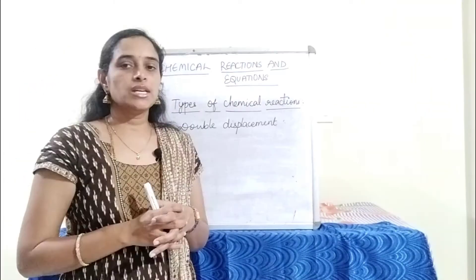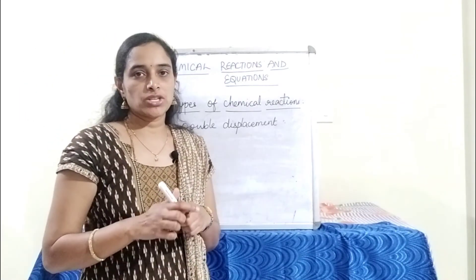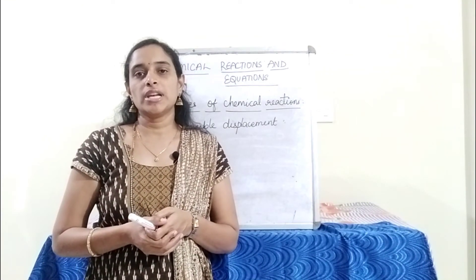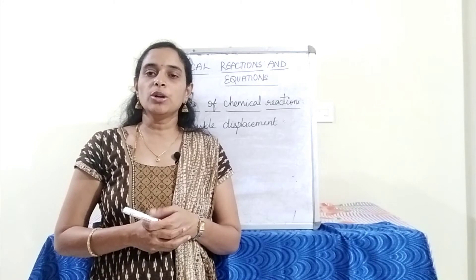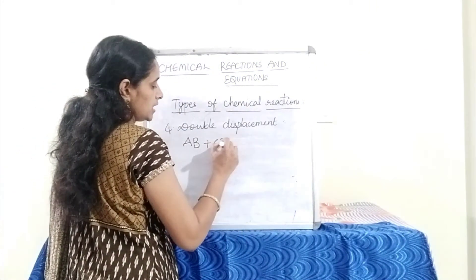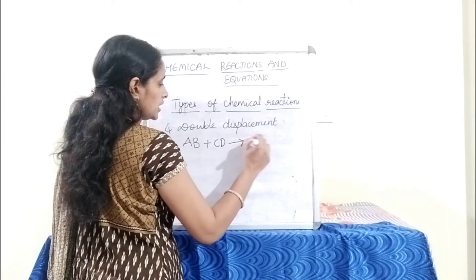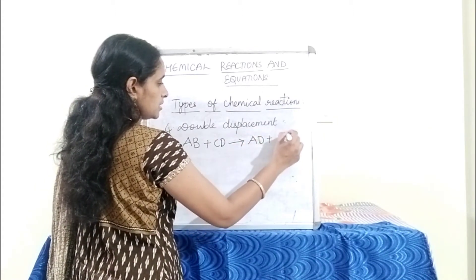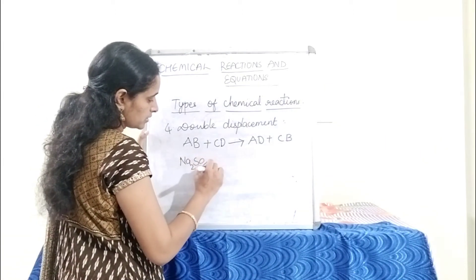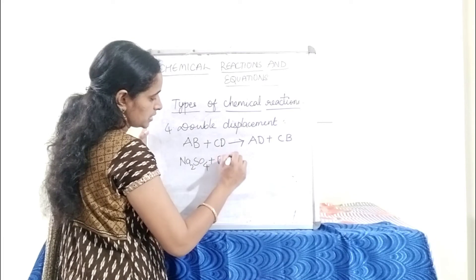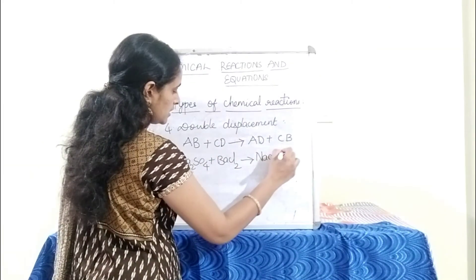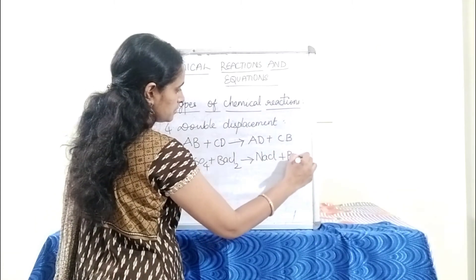Double displacement reaction is a reaction in which new compounds are formed by the mutual exchange of ions between two compounds. The general form is AB + CD → AD + CB. One example is Na2SO4 + BaCl2 → NaCl + BaSO4.